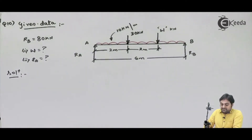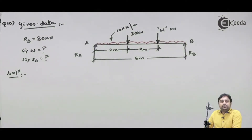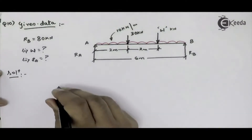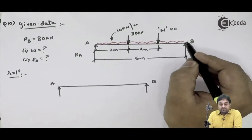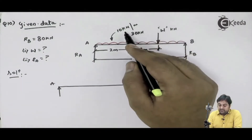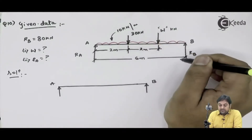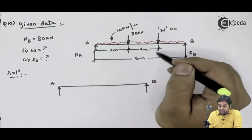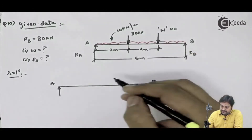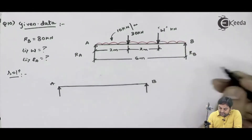Now as we see in this problem, we have a UDL, so that UDL needs to be converted into a point load and we will draw the diagram of the beam again. The UDL is 10 kilonewton per meter over 6 meters, so it is 10 into 6, which gives 60 kilonewton acting at 3 meters from either side.